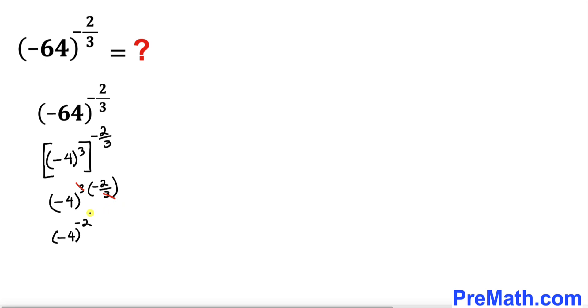Now we have this negative exponent. If we invert this, we can write it as 1 over negative 4, and then our exponent becomes positive 2.